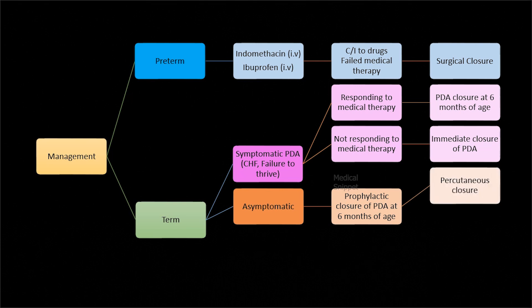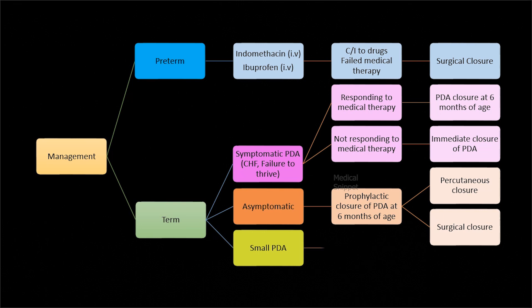The closure of PDA can be done either by percutaneous technique with device closure, or by surgical closure. Even small PDA should be closed due to high risk for endarteritis. The contraindication for PDA closure is Eisenmenger syndrome.